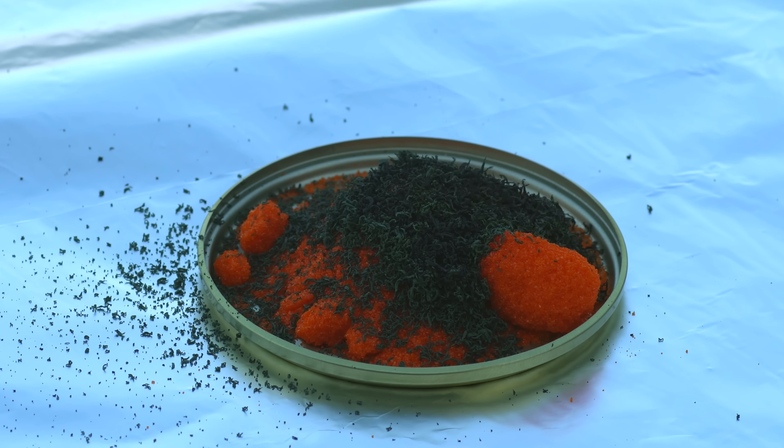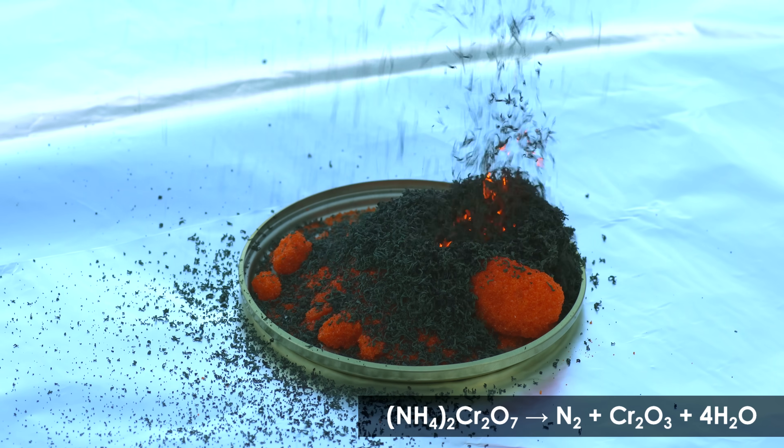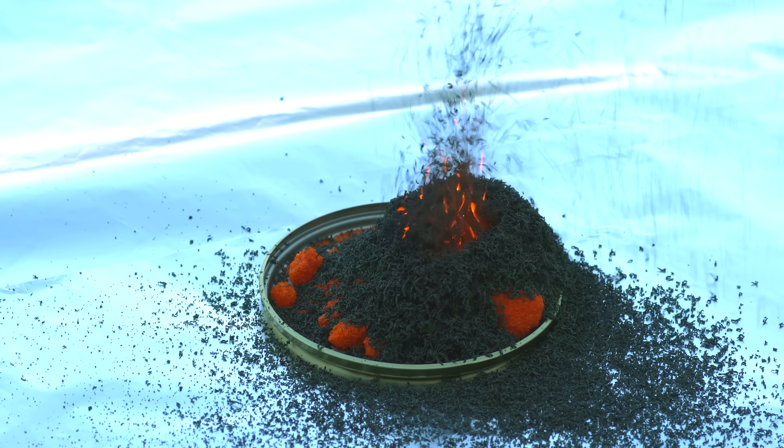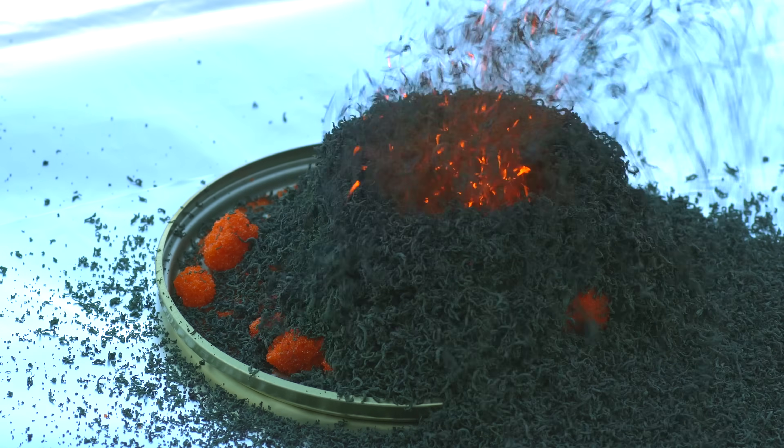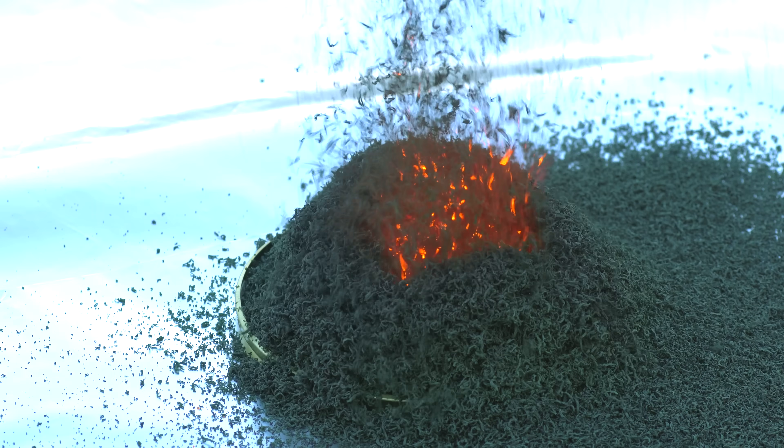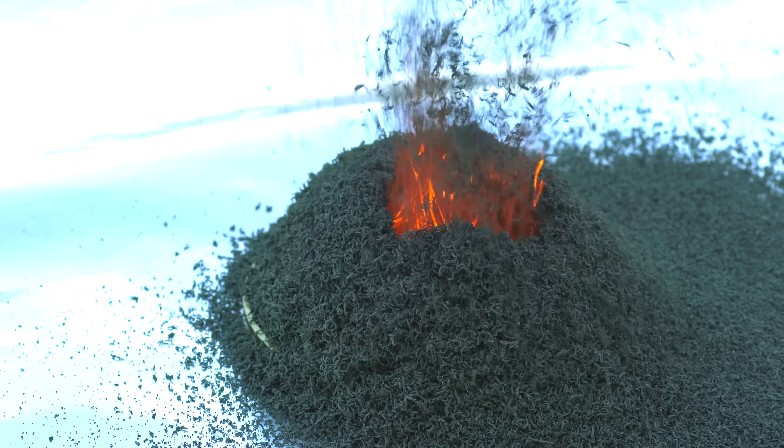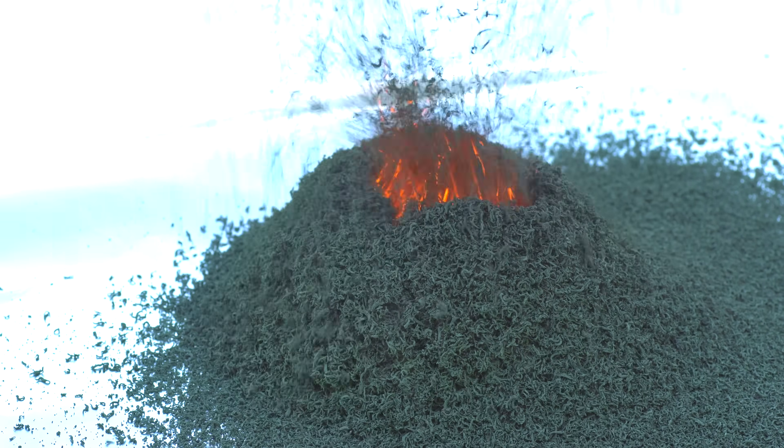Ammonium dichromate started decomposing by itself, forming a dark green substance, chromium oxide. Due to the fact that formed chromium oxide has a porous particle structure, it begins to occupy a larger volume, and over time,